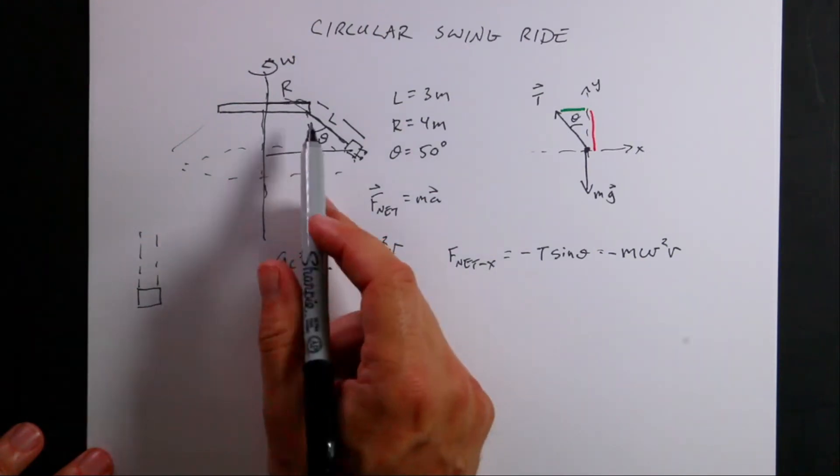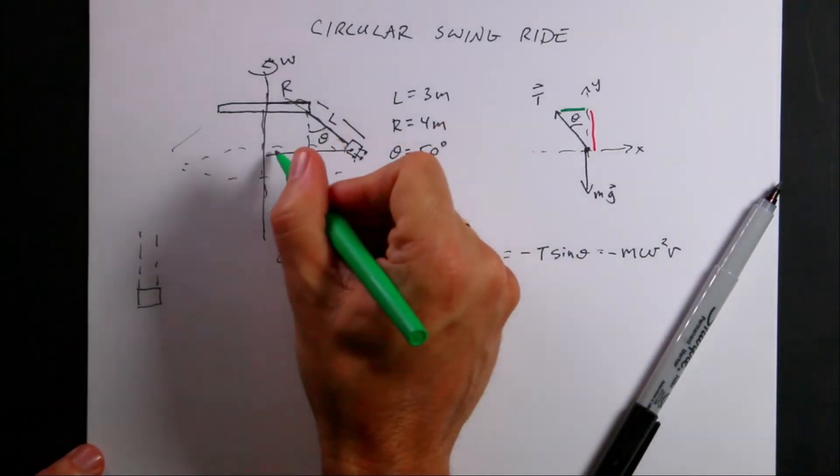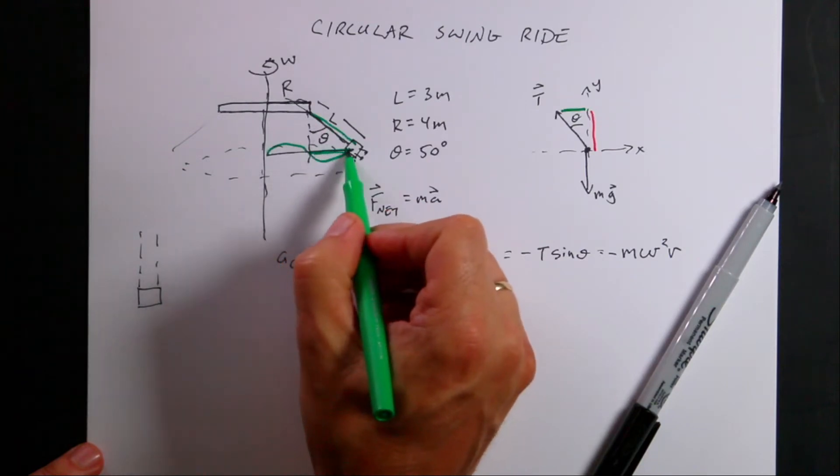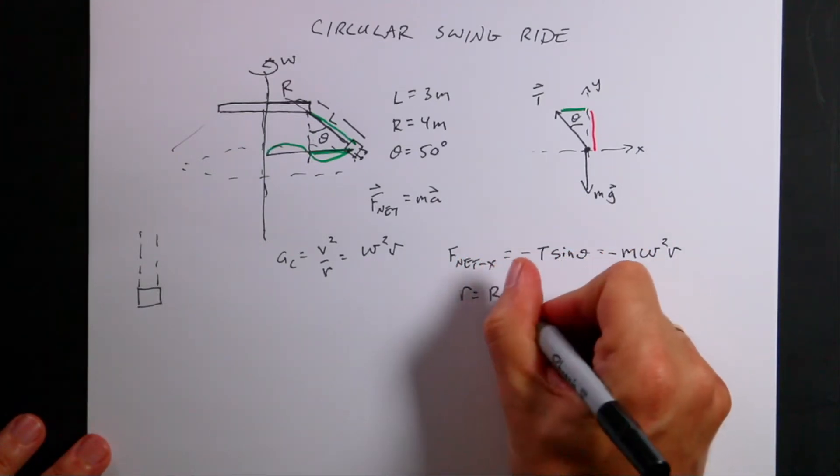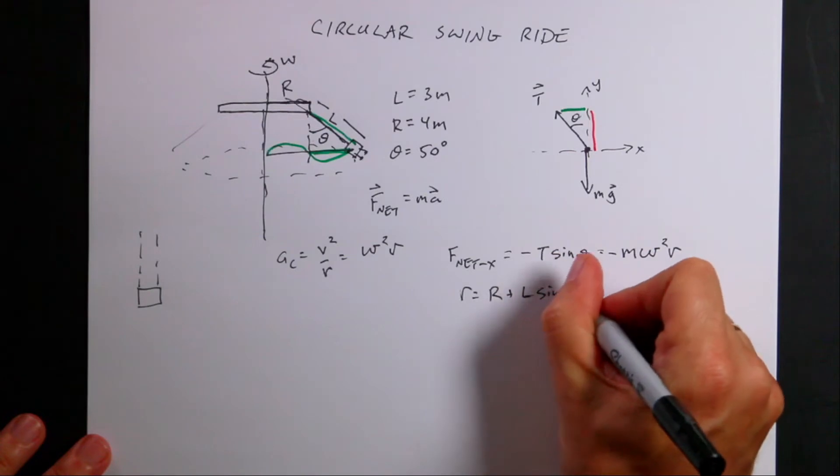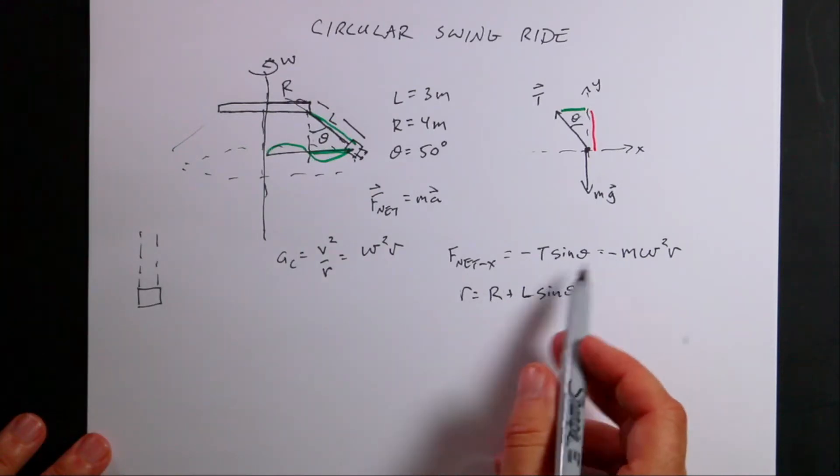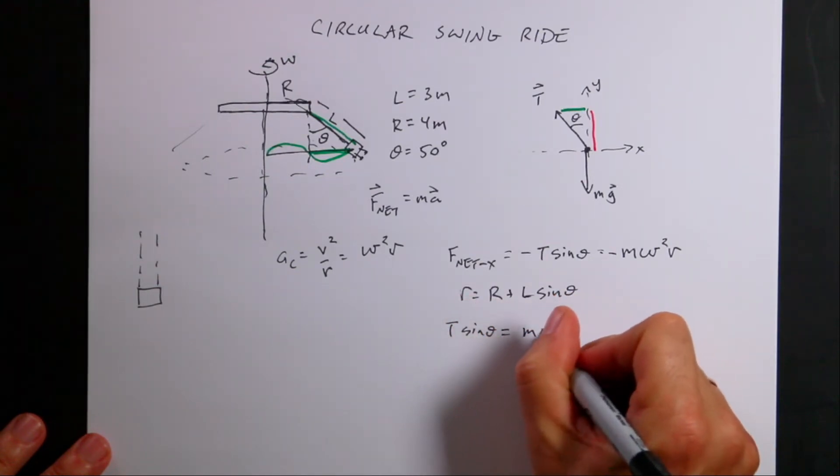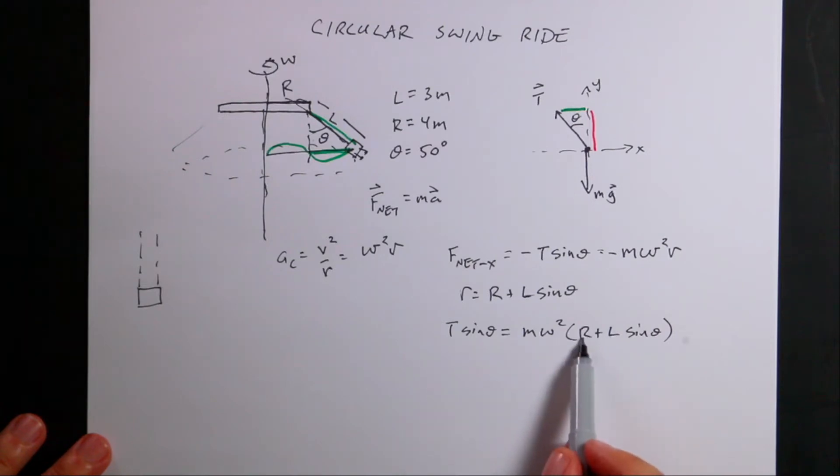Let's find this r. It's going to be this value R plus this value here. If this is length L and that's angle θ, then this is L sin θ. So r = R + L sin θ. That's the total radius of the circle this is moving in. Putting that in, the negatives cancel, and I get T sin θ = mω²(R + L sin θ). The sines don't cancel because of this R. If R was zero, those sine values would cancel, but they don't.